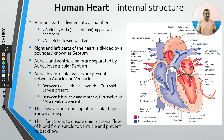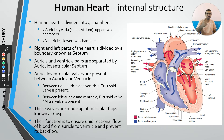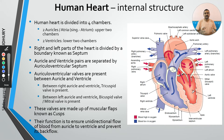The wall of the left ventricle is thicker compared to the wall of the right ventricle. This is because the right ventricle pumps blood only to the lungs, while the left ventricle pumps blood to all different body parts. Therefore, greater pressure is generated in the left ventricle, and to sustain that pressure, the left ventricular wall is thicker.